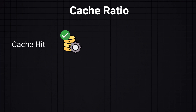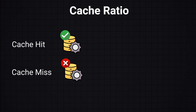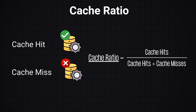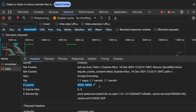When the requested data is found in the cache, we call that a cache hit. On the other hand, we have cache miss, which happens when the requested data is not in the cache, necessitating a fetch from the original source. Cache ratio is the percentage of requests that are served from the cache compared to all requests, and a higher ratio indicates a more effective cache. You can check if the cache was hit or missed from the X-cache header — for example, it may say 'miss' or 'hit'.